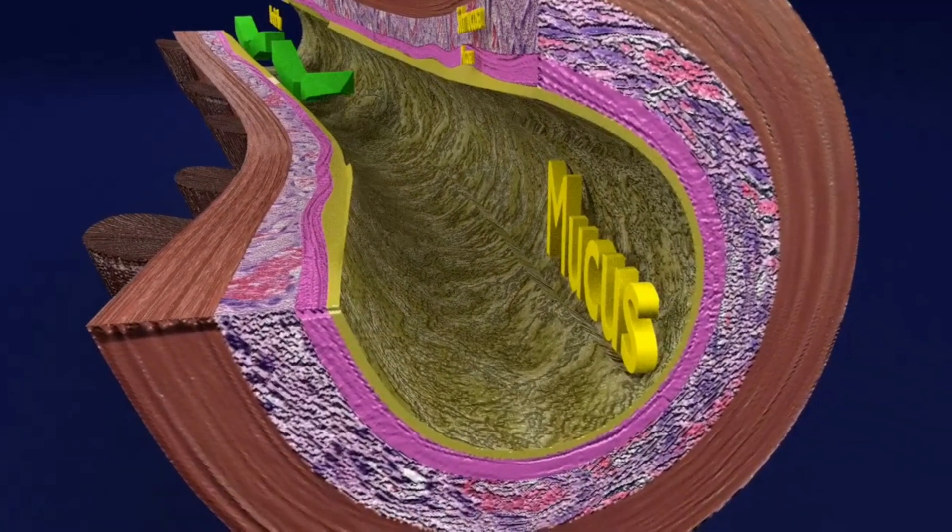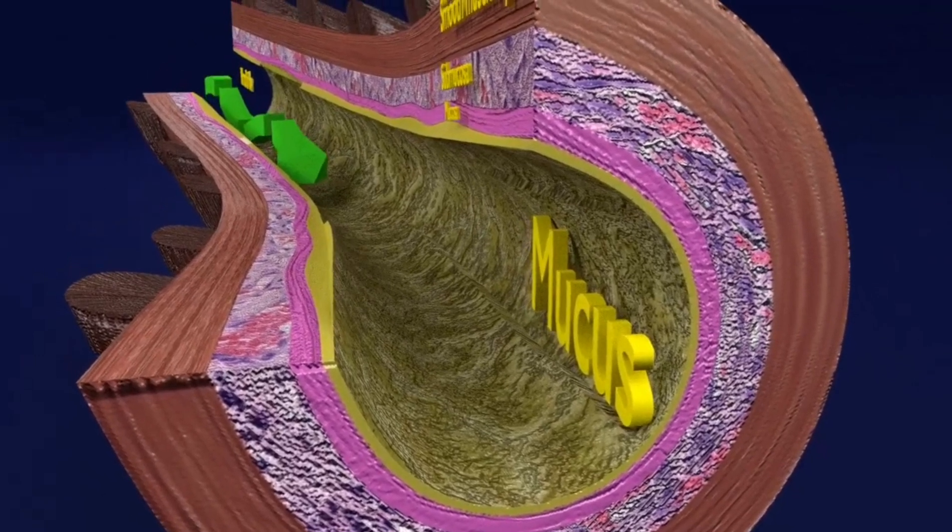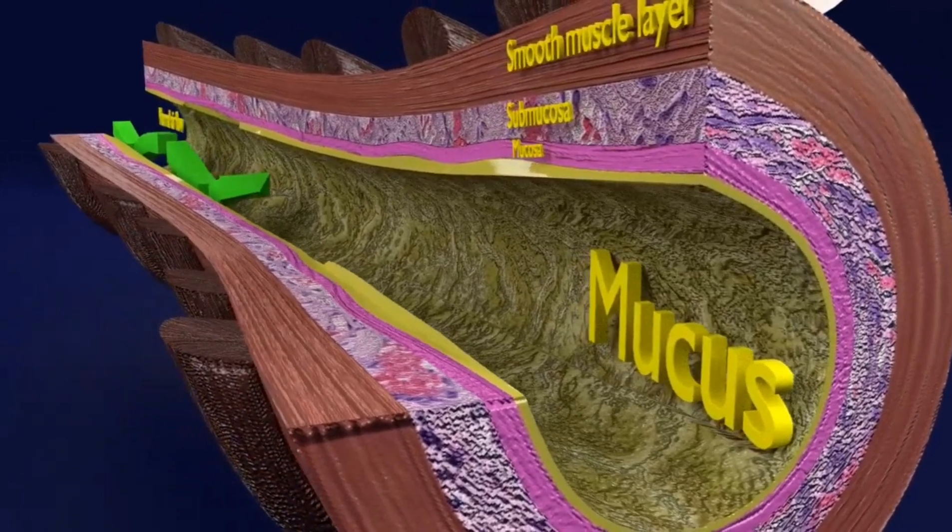Here you see the transverse section of a normal bronchiole wall, showing the relative thickness of the wall components and a patent lumen.